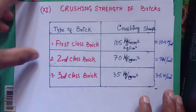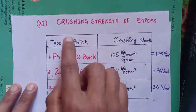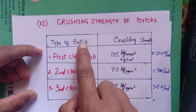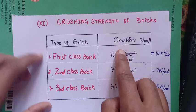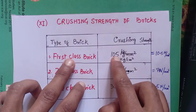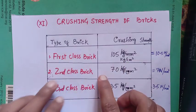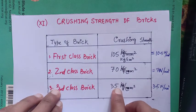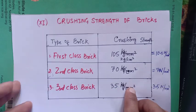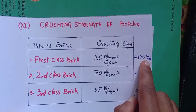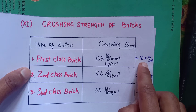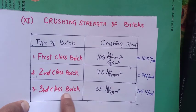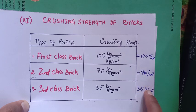Our next point is the crushing strength of bricks. We have to discuss about the crushing strength of different bricks. We are having bricks of three types: first class brick, second class brick, and third class brick. The crushing strength of a first class brick must be 105 kg per cm², for second class brick it must be 70 kg per cm², and for third class brick it must be 35 kg per cm². In Newton per mm², first class brick must be 10.5, second class brick must be 7, and third class brick the crushing strength must be 3.5 Newton per mm².